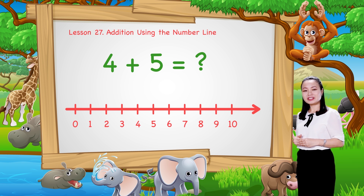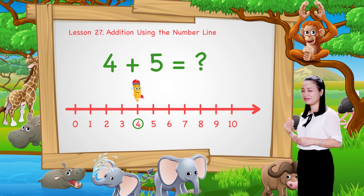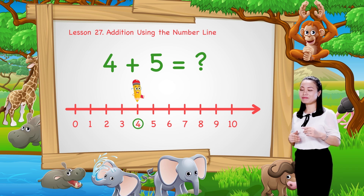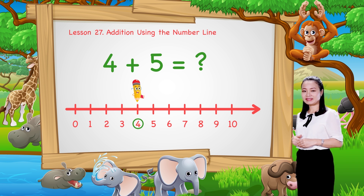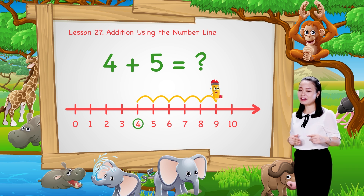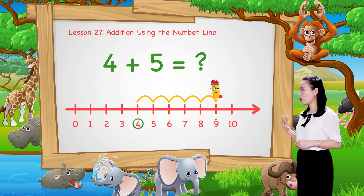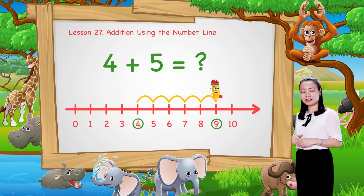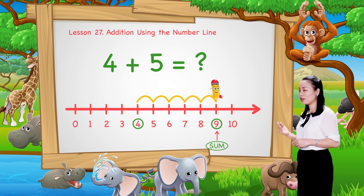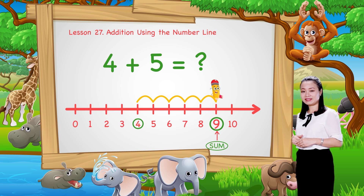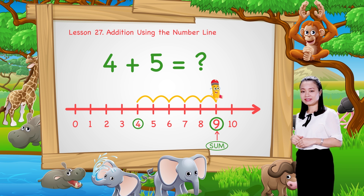We start from number 4. Then jump 5 numbers to the right. Then see the number where we stop to find the sum. Here, we stop at number 9. Therefore, 4 plus 5 equals 9.